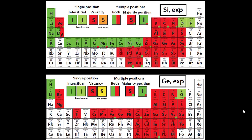Like here, the 3D elements in silicon, they take an interstitial position, while in germanium, they take a substitutional position. Can this be understood?